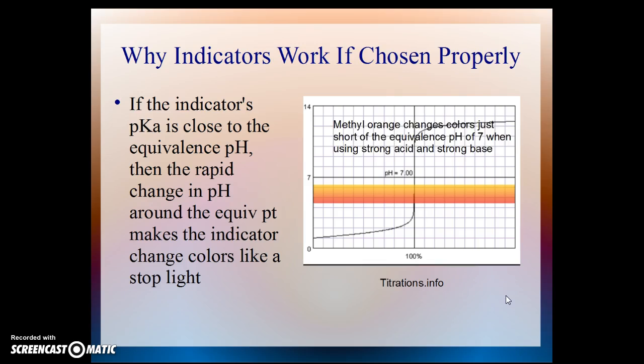Methyl orange is the one chosen here. It changes colors just short of the equivalence pH of 7 when you're titrating a strong acid and a strong base. So methyl orange would be a decent indicator if you titrate base into acid. It would work if you titrated acid into base.